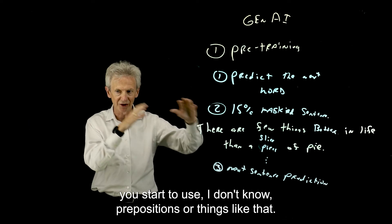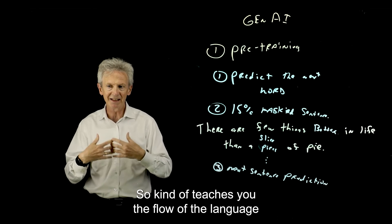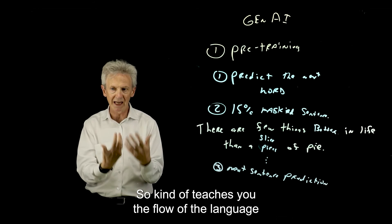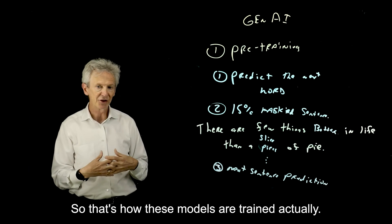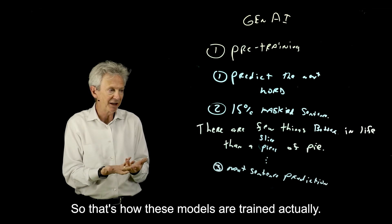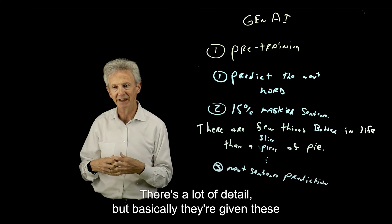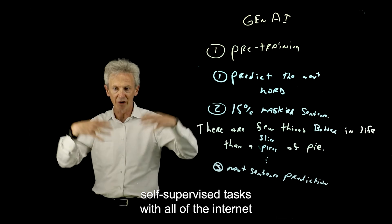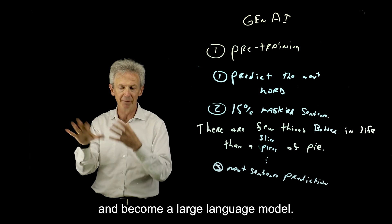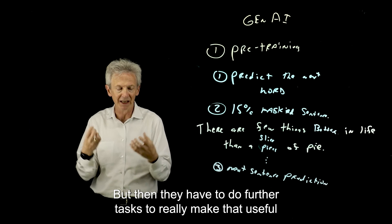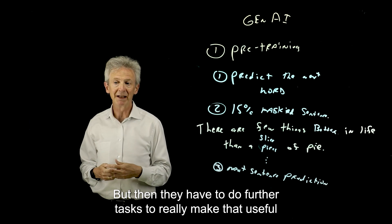You start to use prepositions or things like that, referring back to things. So it teaches the flow of the language and more about what words extend the story. So that's how these models are trained. There's a lot of detail, but basically they're given these self-supervised tasks with all of the Internet, and then they kind of learn the language itself and become a large language model. But then they have to do further tasks to really make that useful.